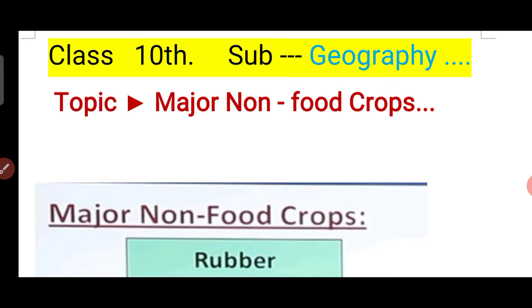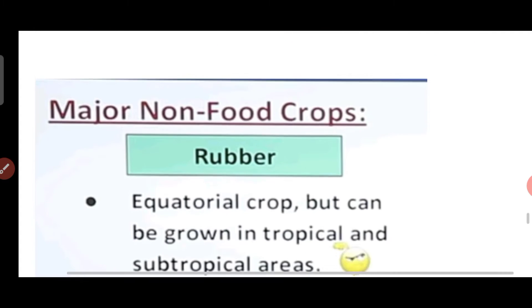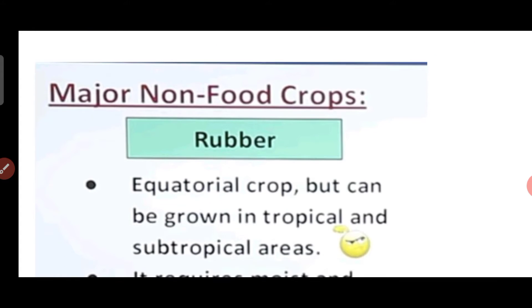Now, crops which are not used to eat but can be used for other things — these are the major non-food crops. One example is rubber. Everybody knows that rubber is used in every place, and it is one of the most major non-food crops.